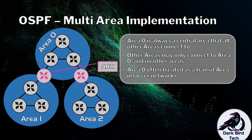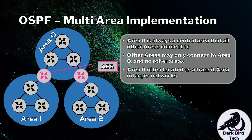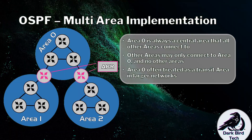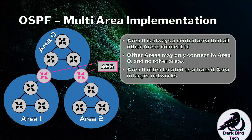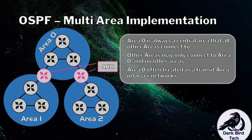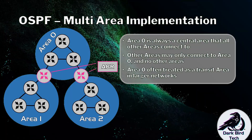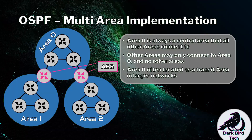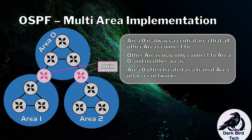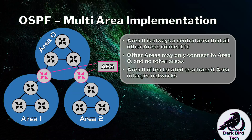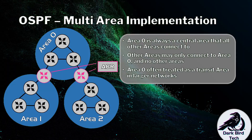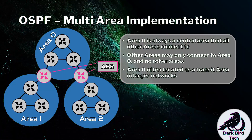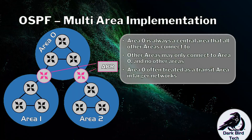Because area 0 is the center of everything, many organizations design area 0 as a transit area between all other areas — no servers or clients in area 0, just a way to get traffic from area 1 (users) to area 2 (data center). It's also smart to put the ISP connection in area 0 so all other areas have a fair way to reach the internet.